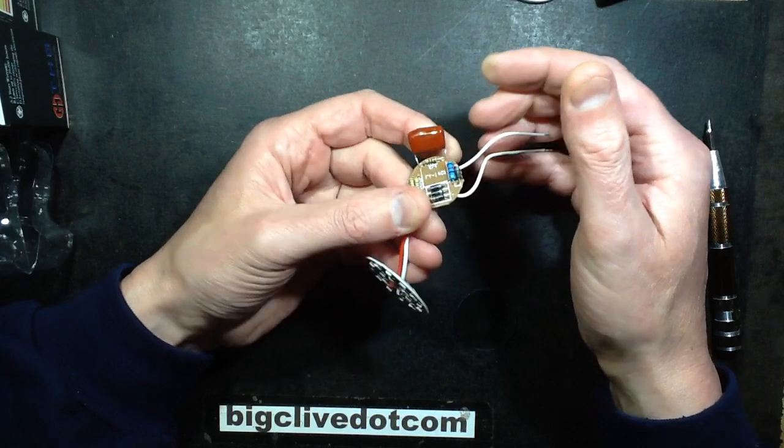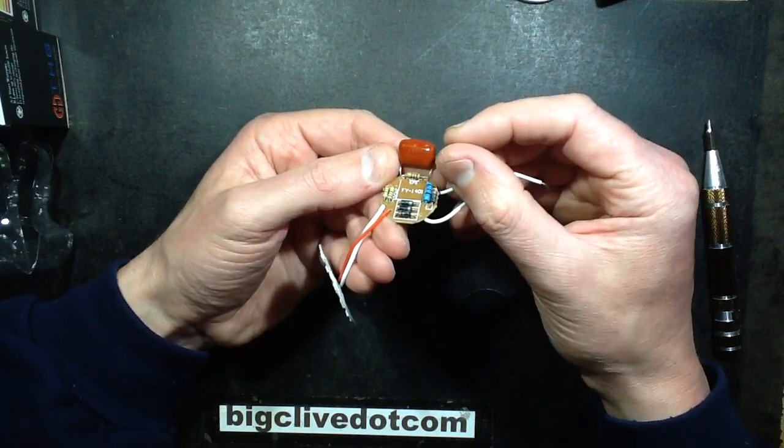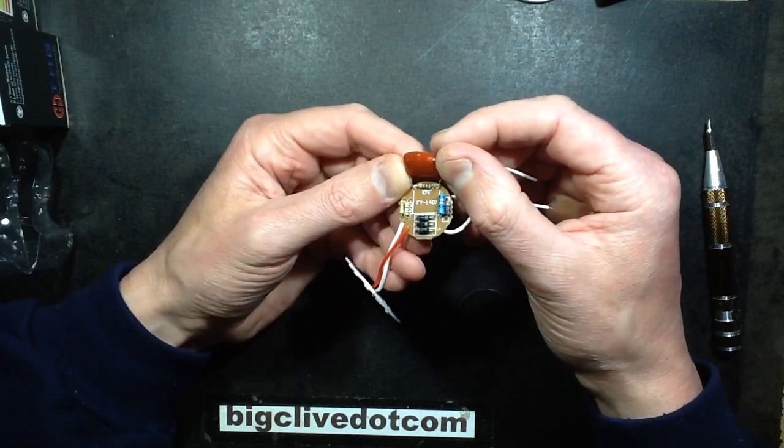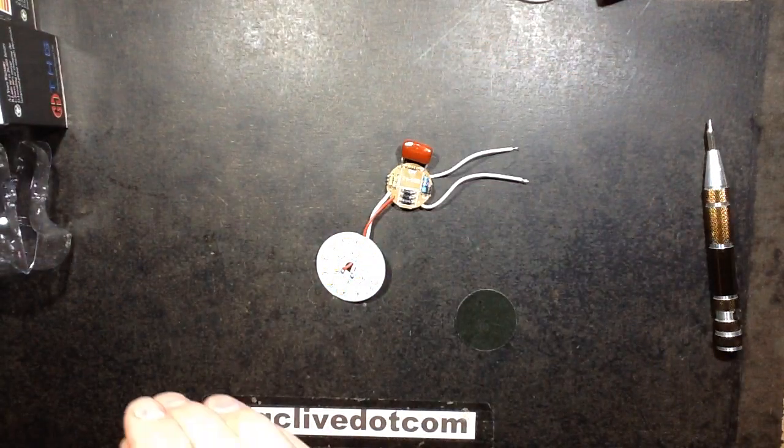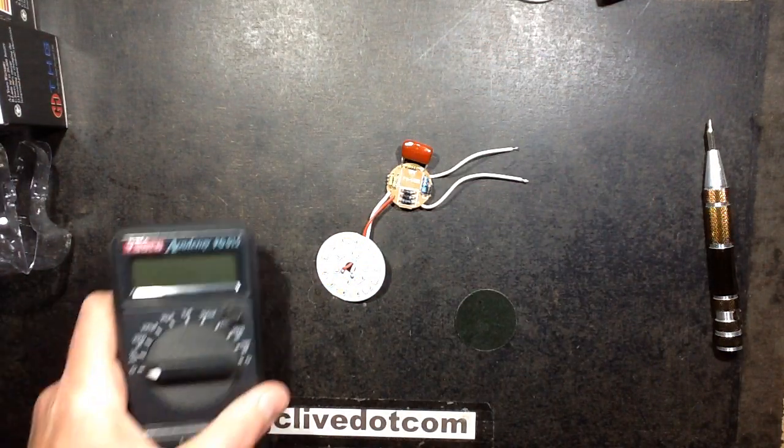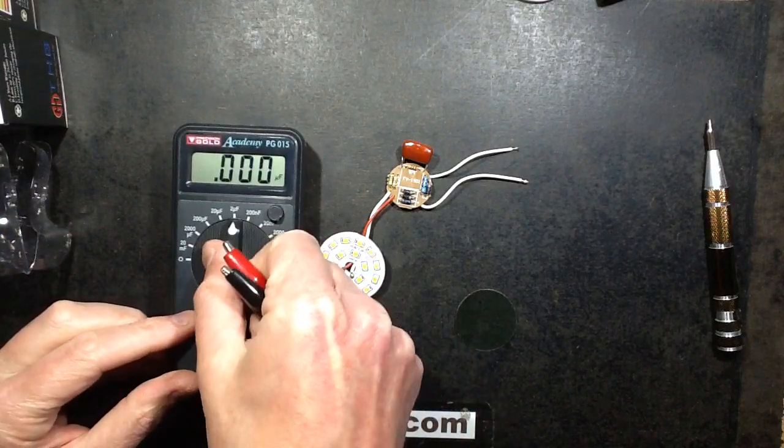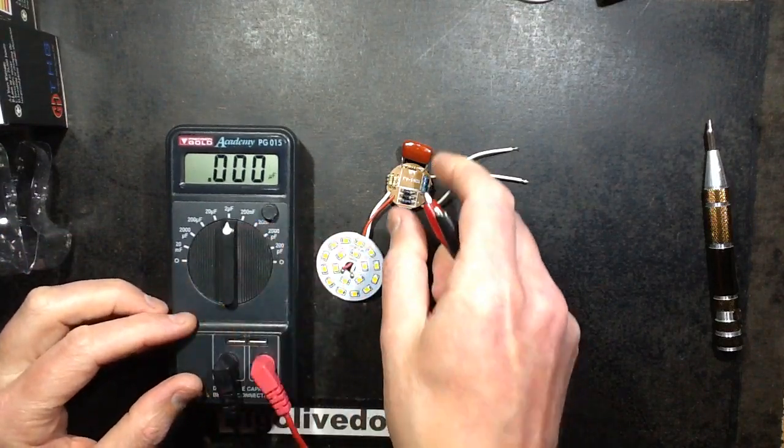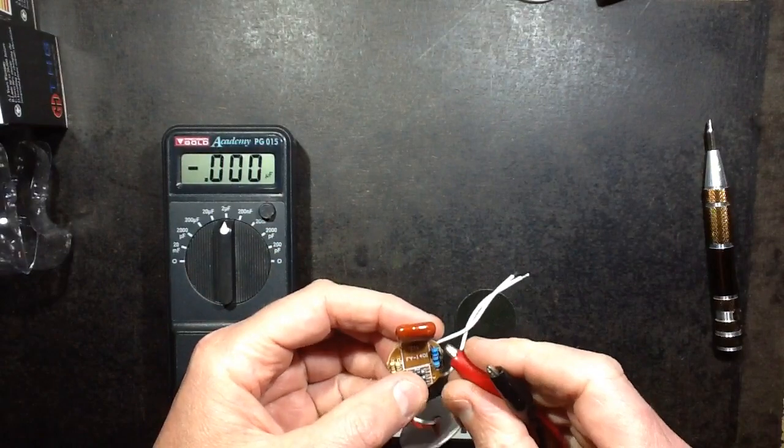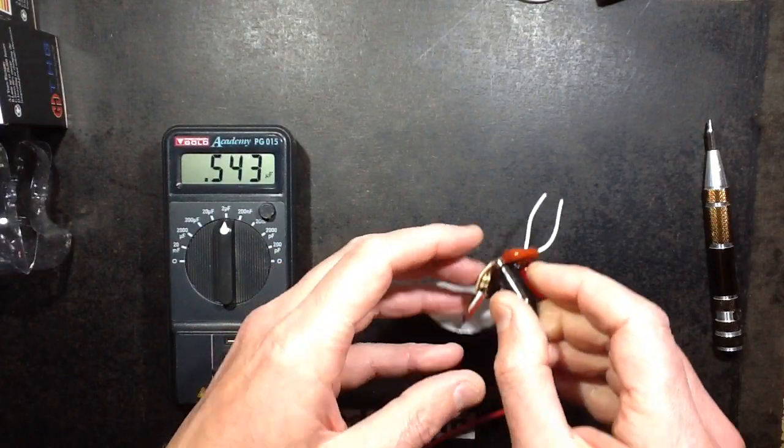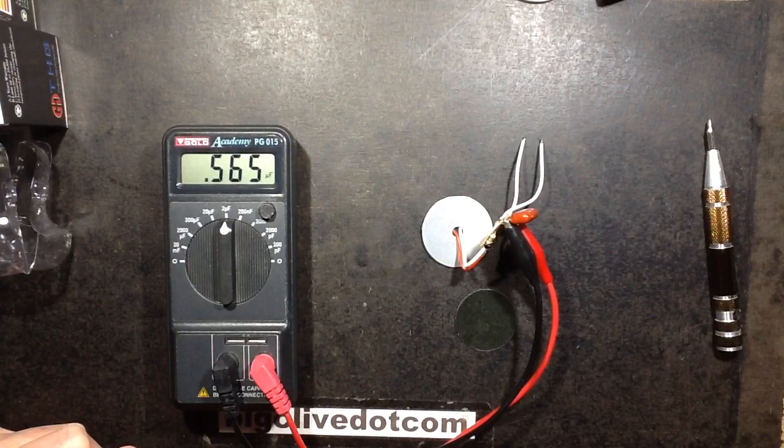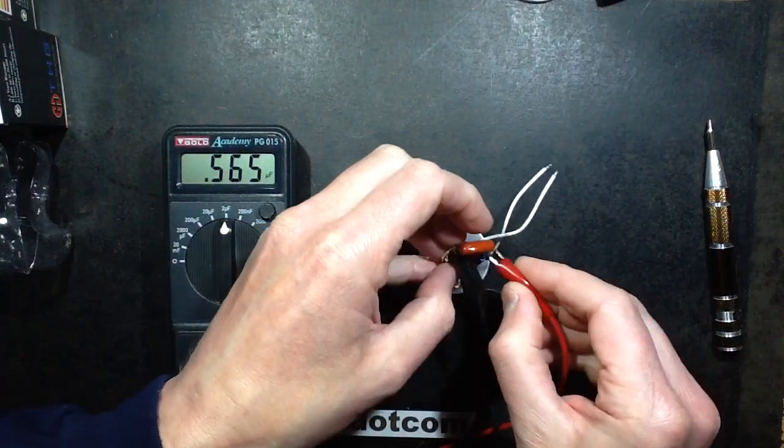And the circuit board has no smoothing. It's a capacitive dropper with a 560 nanofarad 400 volt capacitor. Let's check that, see if it is really. Although having said that I might not get a good result here because there's a 1 megohm resistor across it. But let's see what happens. 560 nano, let's put that to... Yeah, 560 nano. Yeah, that's good enough.